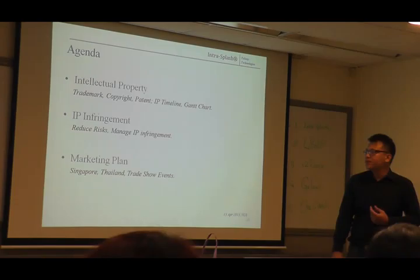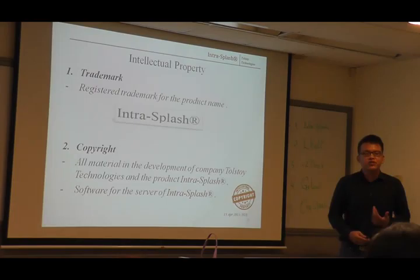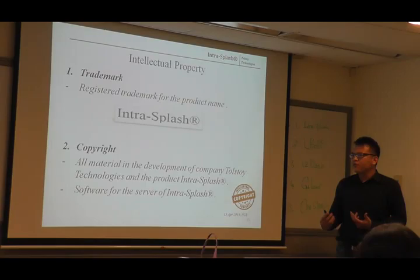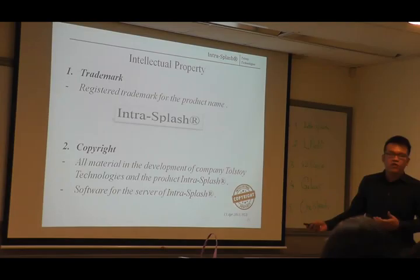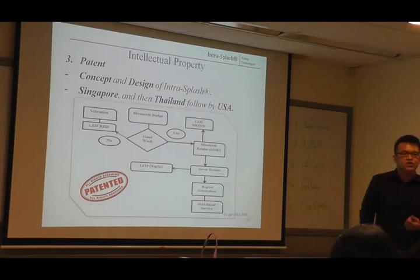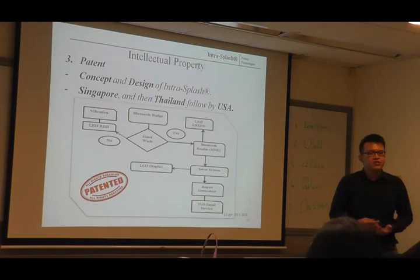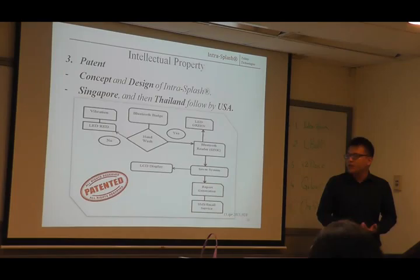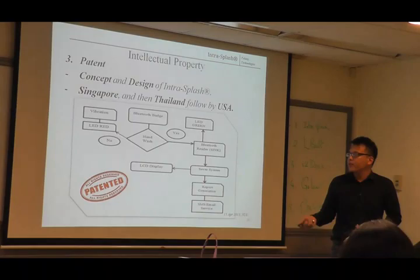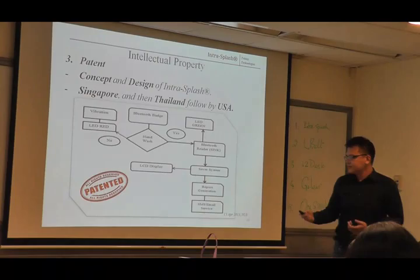I'm going to present intellectual property, followed by marketing and selling plans. For intellectual property, we have registered a trademark for our product name IntraFlash. The application is to prevent unfair competition by protecting the use of our system name IntraFlash. It will take around four to six months for approval. We then applied copyright for all materials in the development of our company, including the server and software for IntraFlash. Patent is the most important IP — since it's not just a product but a system, we applied patent for the concept of how the system works and its design. Based on our business plan, we already applied for a patent in Singapore, and our next target would be Thailand and the US in 2016.